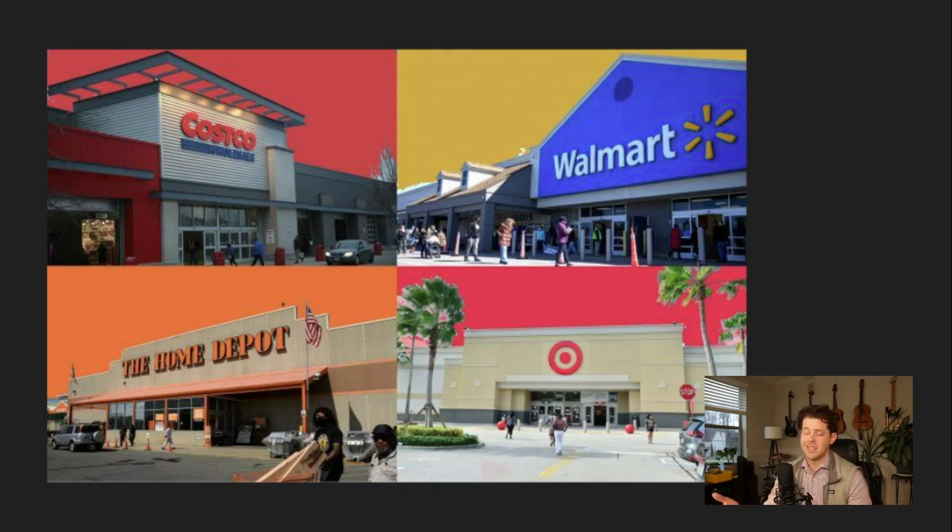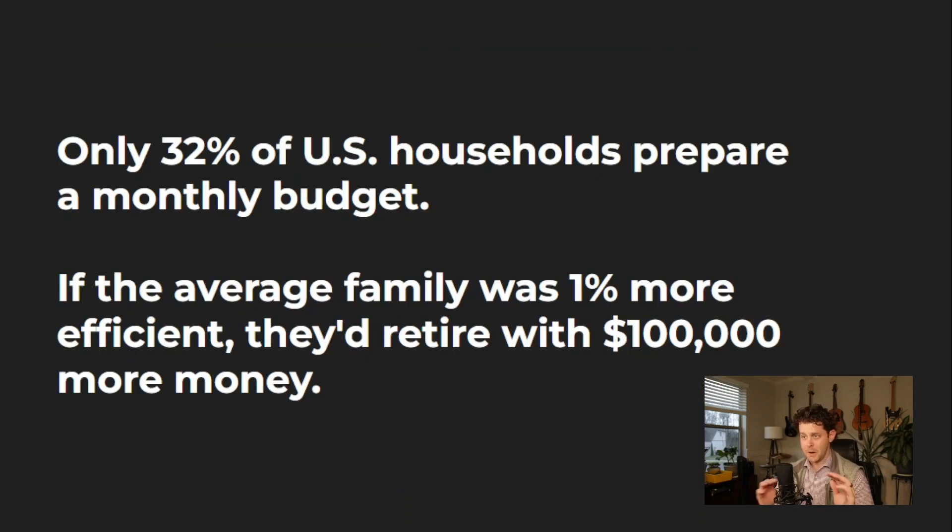Only 32% of U.S. households prepare a monthly budget. If the average family was 1% more efficient in their budget, they'd retire with $100,000 more money. Here's how I get to that number: 1% efficiency.